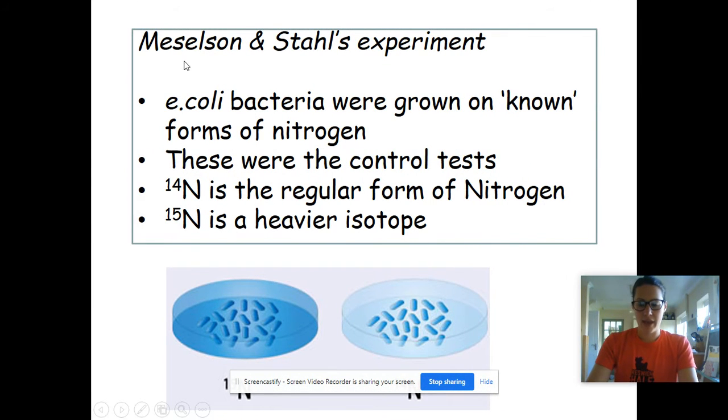The famous experiment which is used as evidence for this is Meselson and Stahl's experiment using E. coli. E. coli bacteria were useful to be used in this experiment because bacteria reproduce quite quickly, so you're able to see the effects of the changes that they make quite relatively quickly. And also you can supply bacteria with the nutrients that you want them to incorporate into their cells quite easily. You can isolate them and just give them the nutrients that you want them to use.